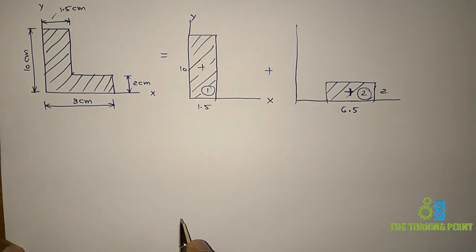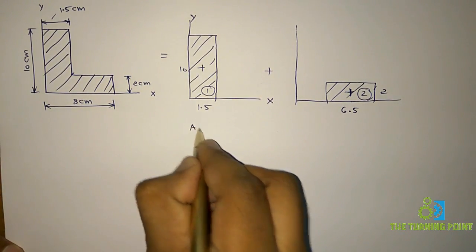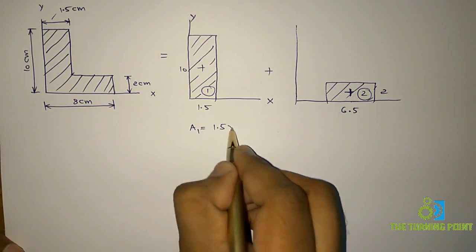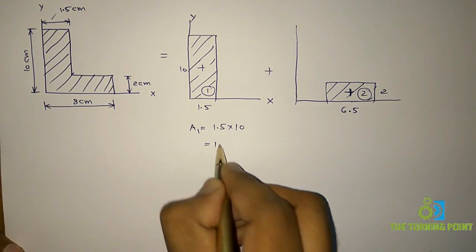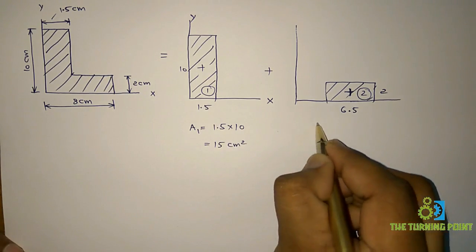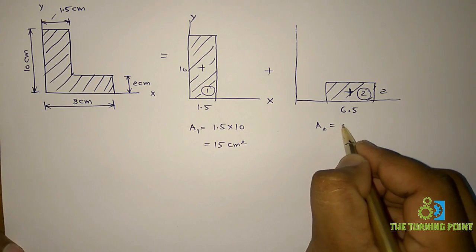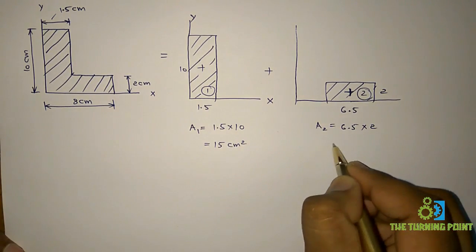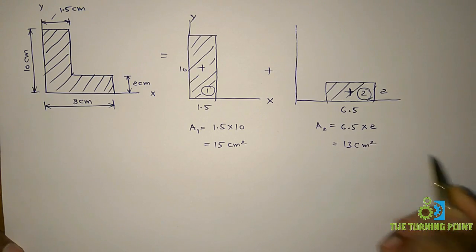First let us find the area of these two geometries. Area of the first rectangle is base times height: 1.5 into 10, which is equal to 15 cm². Area of the second geometry is base times height: 6.5 into 2, which is 13 cm².